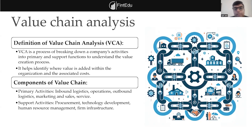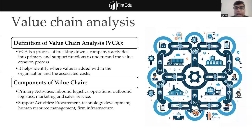Primary activities can include logistics, operations, outbound logistics, marketing and sales. Support activities include procurement, HR. When we specifically talk about oil and gas and real estate industry, value chain analysis helps not only from a transfer pricing perspective but also from a business perspective. When you have an idea of which activity contributes how much value, you can identify where changes or restructuring are needed and ensure entities are compensated based on their contribution.